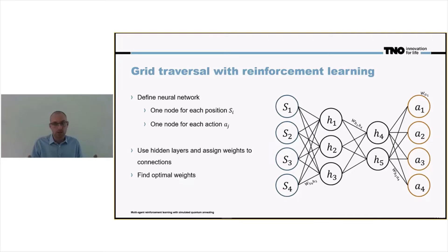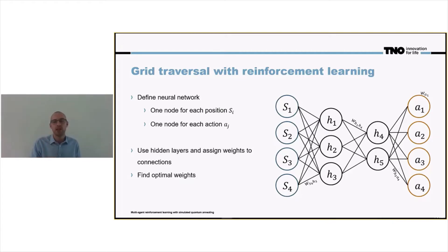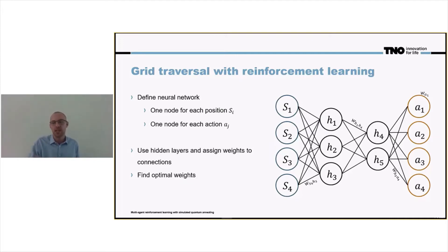The way to then use this network is to, for instance, fill in the location. Suppose I'm in location F3 and using the optimal weights, then a high probability will be obtained for action, say, A2. So in state F3, I have to take action A2.